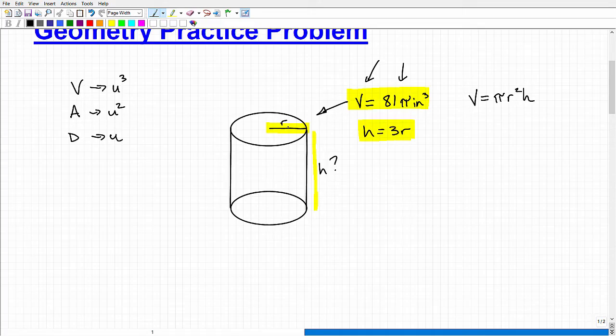So here we're dealing with inches cubed, so our radius and height will be in inches. So let's go ahead and get to this. So we know our volume is 81 times pi inches cubed. So I'm going to substitute this V here for the 81 pi.